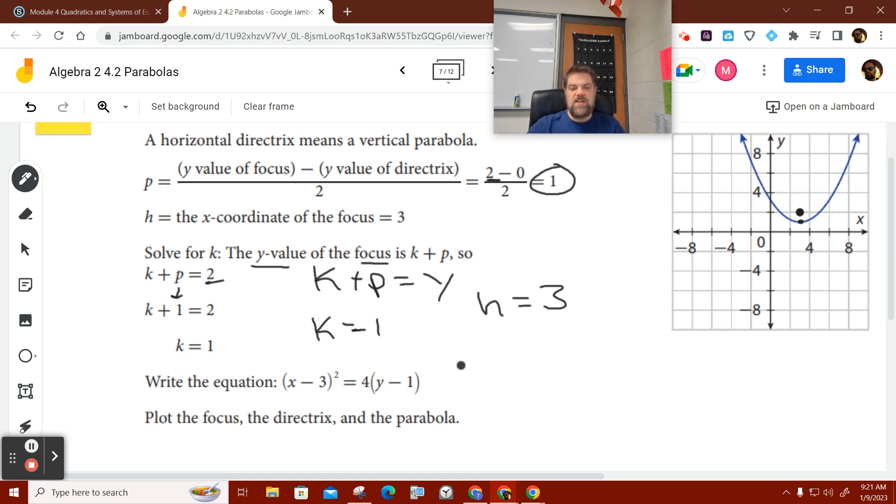We said on this previous slide that the equation is X minus H squared is equal to four times P times Y minus K. And that's it. That's all we do. Well, what is that? That's going to be X minus what's H, three, squared, which is equal to four times P. What's P, one, times Y minus K. What's K, one? All this reduces down to this.